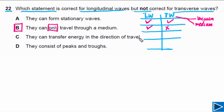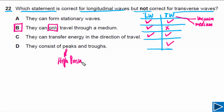Option C — they can transfer energy in the direction of travel — is true for both longitudinal and transverse progressive waves, so it applies to both. Option D states they consist of peaks and troughs. This is true for transverse waves, but it is also true for longitudinal waves — peaks mean high pressure and troughs mean low pressure. So option D is true for both. Our answer remains B.